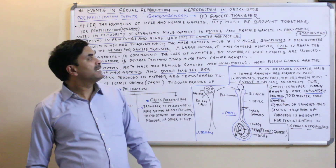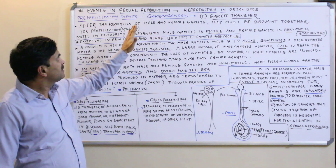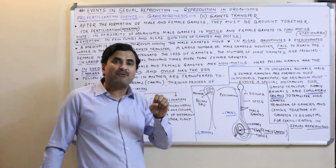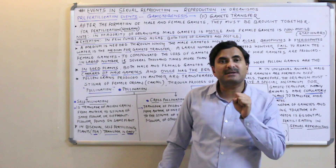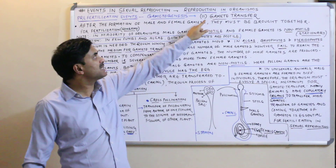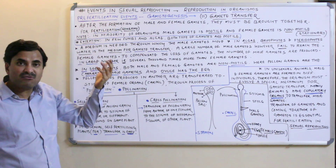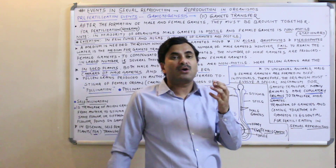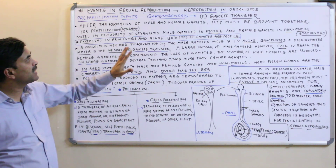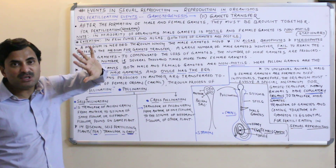Hello everyone. Today we will be discussing how gametes are transferred just before the process of fertilization. For successful fertilization, two compatible gametes must come close to each other, so gamete transfer is included in the pre-fertilization events. Once the gametes are transferred, the next stage of sexual reproduction — fertilization — occurs, where the gametes fuse together. The theme of today's video is gamete transfer.